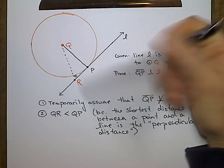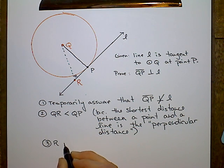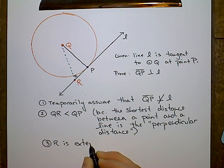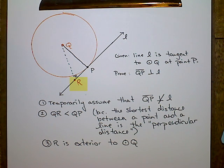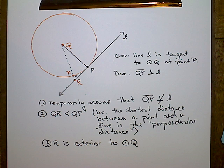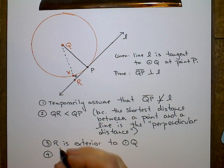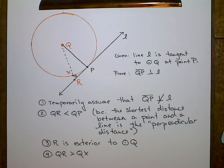Let's see if that makes sense, or if there's some way we can contradict that statement. If we think about the definition of a tangent line, it can only touch the circle once. So if P is the only point where it touches the circle, then R must be exterior to circle Q — outside of it. That means segment QR must pass through the circle, and I'll call that point X.